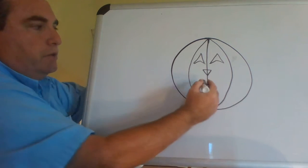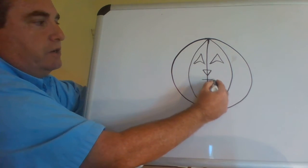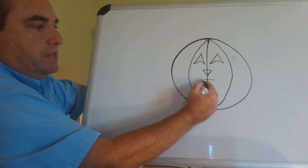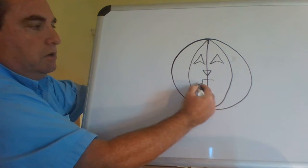For the mouth, we're going to start with a horizontal line right underneath that nose. For the teeth, we're going to go down, over, and up.